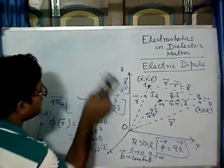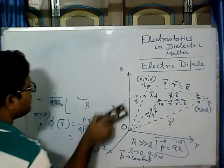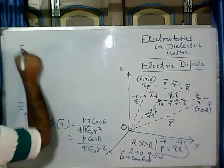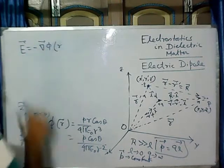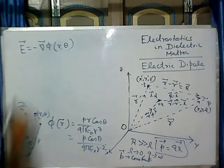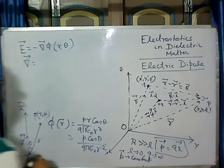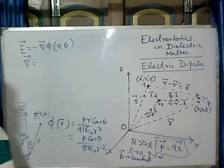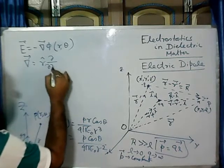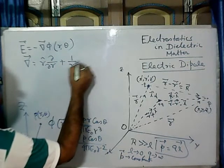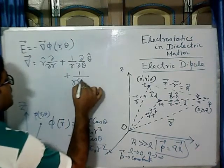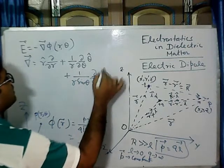For doing that, we have to again operate the gradient: E equals minus gradient of phi. Here phi is a function of R and theta. We know that the gradient form in spherical polar coordinates is: del/del R times R hat, plus 1 by R times del/del theta times theta hat, plus 1 by R sine theta times del/del phi times phi hat.